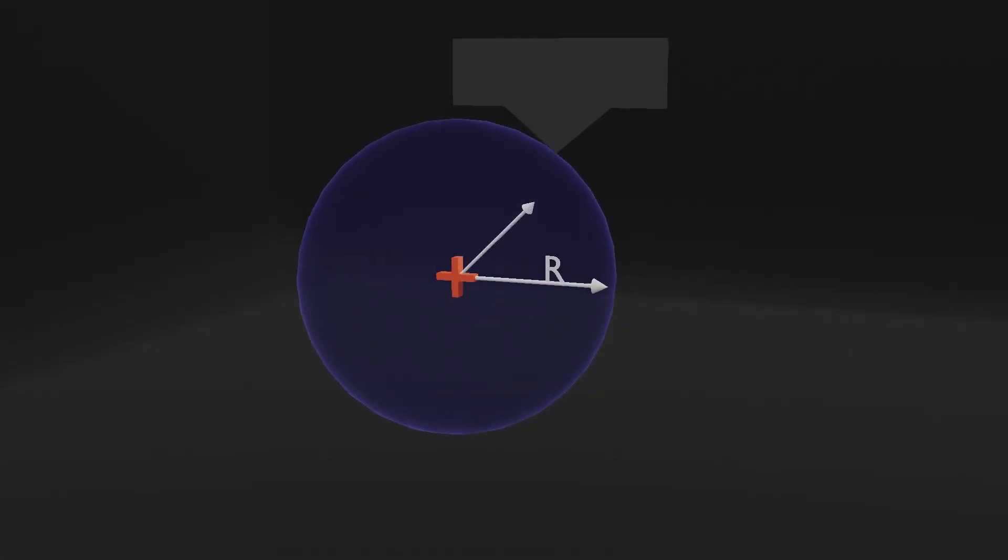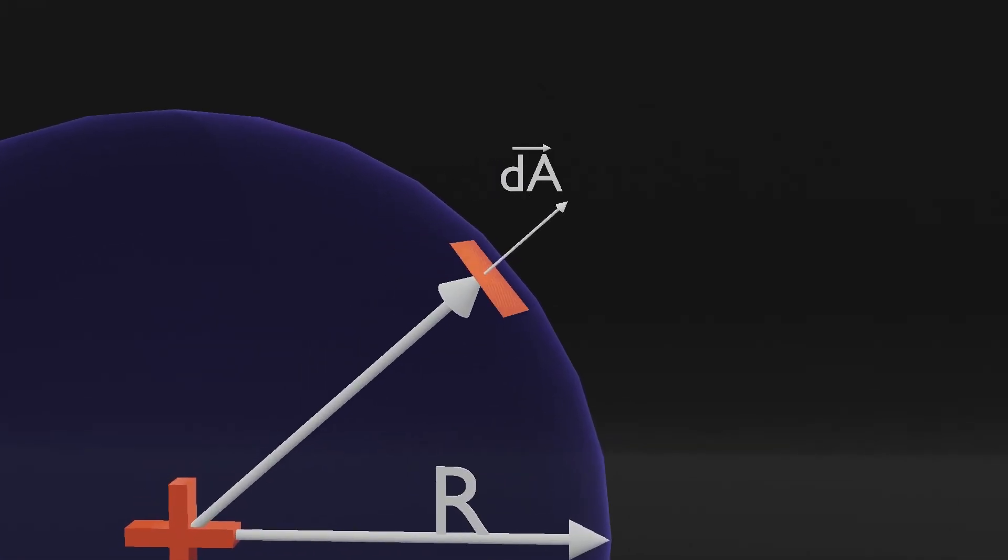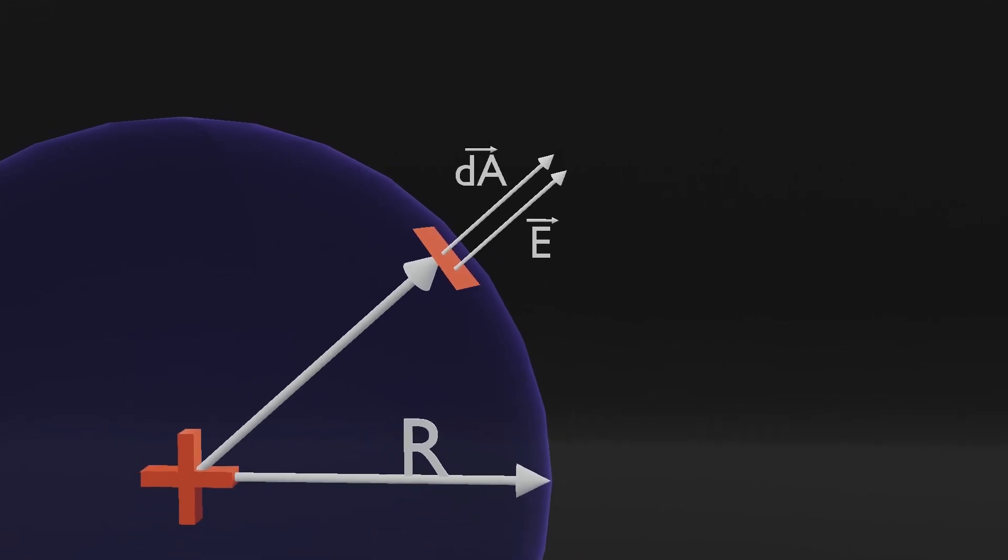Now, consider a small area dA on this sphere. The area vector is perpendicular to the surface and points radially outward. Since the electric field generated by the charge is also radially outward, the angle between the area vector and the electric field is 0.